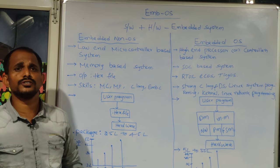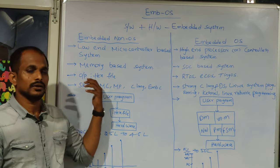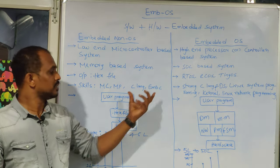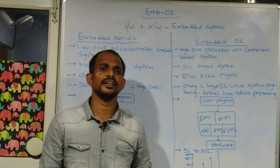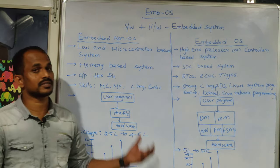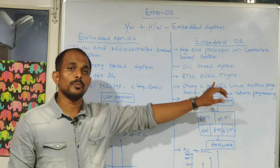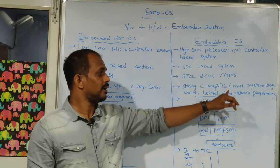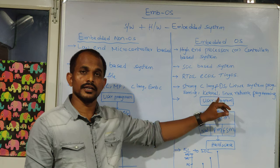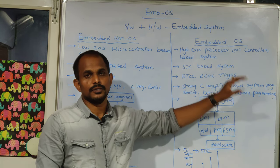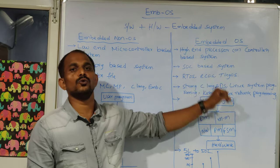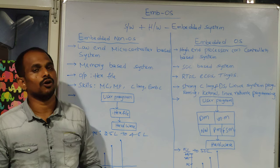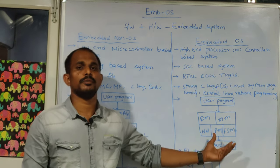The skills used at the non-operating system level include microprocessors, microcontrollers, C language, and embedded C language — mostly no additional knowledge is required beyond these. But once you enter the operating system level, you need very strong knowledge in C, data structures, Linux system programming, kernel programming, and Linux network programming. Only if you are strong in these areas can you develop operating system level products in embedded OS.